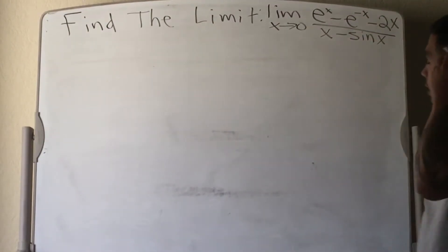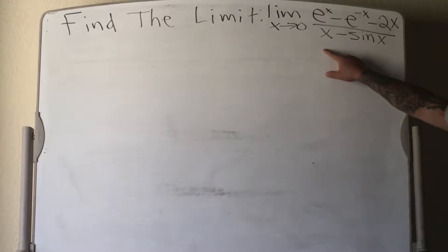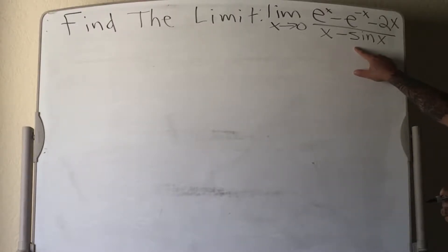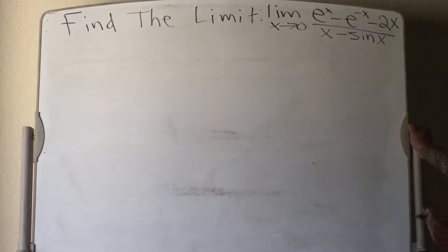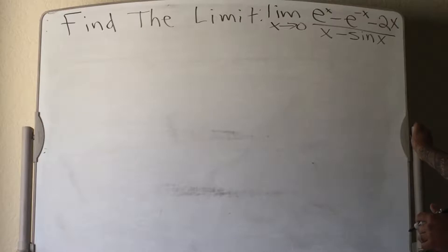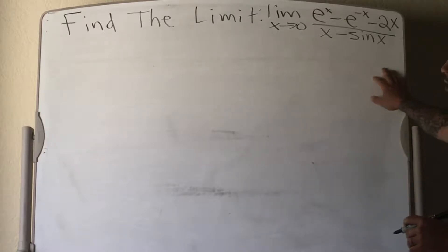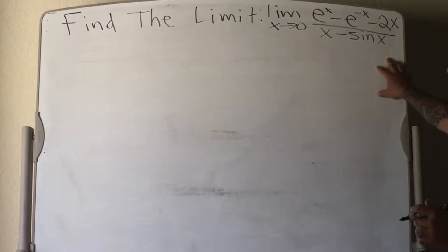I'm going to be finding the limit as x approaches 0 of e to the x minus e to the negative x minus 2x over x minus sine x. It could look problematic and confusing, but it really isn't. To do this, you're really going to need to be strong in L'Hôpital's Rule. Hopefully doing some difficult problems like this will help you in your studies when you're preparing for an exam.